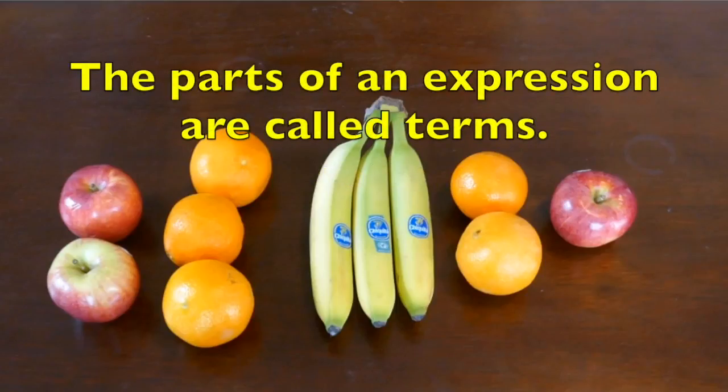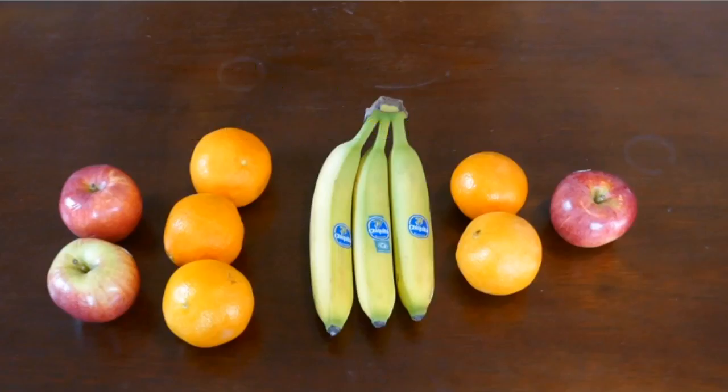The parts of an expression are called terms. So here we have an algebraic expression of two apples, three oranges, three bananas, two oranges, and an apple. And what I have here are five terms, five different parts of the expression.